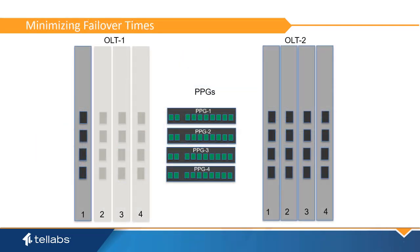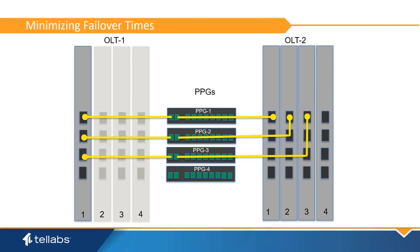For best protection switching performance, it is recommended to spread the standby PON ports among PON cards. For example, if a PON card in Slot 1 on OLT 1 has four PON Protection groups, then OLT 1 Slot 1 Port 1 could be assigned to OLT 2 Slot 1 Port 1, but the second port on OLT 1 Slot 1 should be matched with a different PON card on OLT 2, for example Slot 2 Port 1. By spreading the protection PONs across PON card slots, if a whole PON card were to fail, the switch time would remain constant.